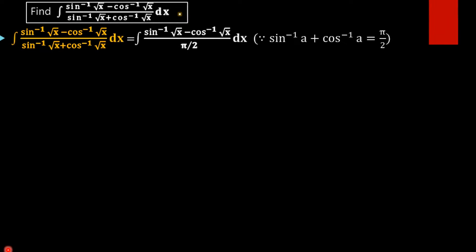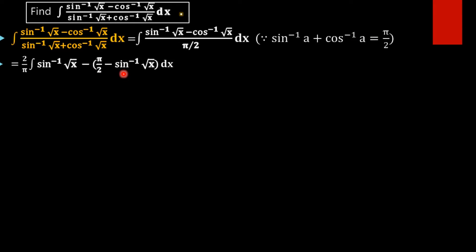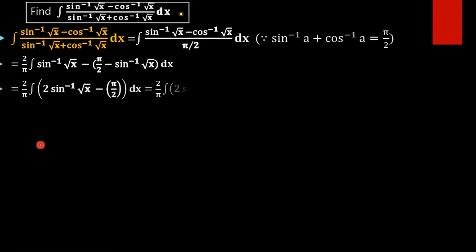Taking pi by 2 as the denominator, we apply the property cos inverse of root x equals pi by 2 minus sin inverse of root x. On substituting and taking the negative inside, the numerator becomes sin inverse of root x minus pi by 2 minus of minus sin inverse of root x, giving 2 sin inverse of root x minus pi by 2.